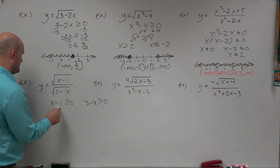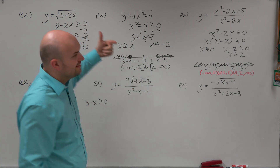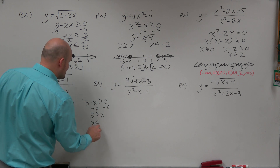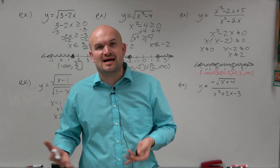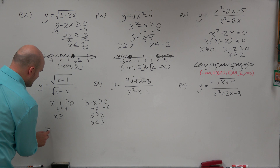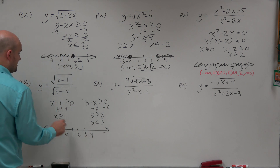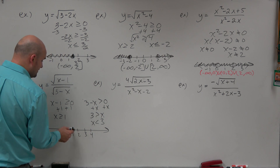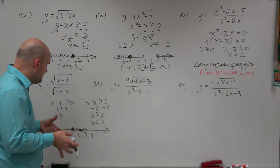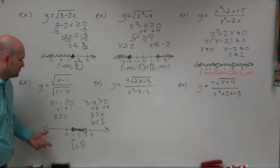Now we solve. Adding 1 to both sides: x has to be greater than or equal to 1. For the denominator, we add x to the other side, so 3 is greater than x, which means x is less than 3. The flipping of the sign is not magic — it's just to ensure the correct answer. So on my number line with 0, 1, 2, 3, 4: x has to be greater than or equal to 1 — closed circle at 1 — but x has to be less than 3 — open circle at 3. The domain is restricted between 1 and 3: bracket 1, comma 3, parenthesis, where 1 is included but 3 is not.